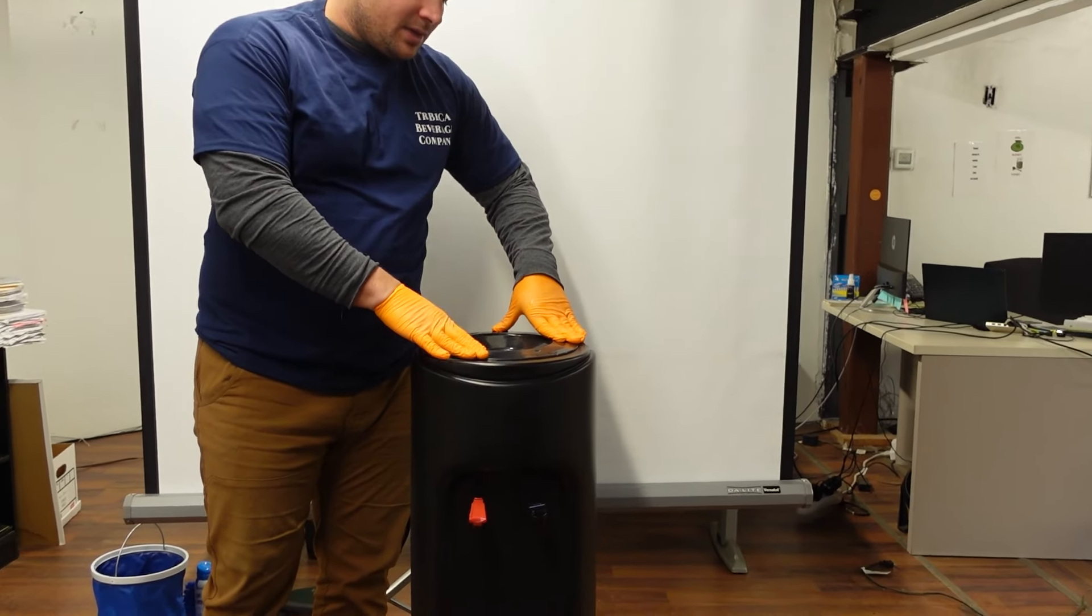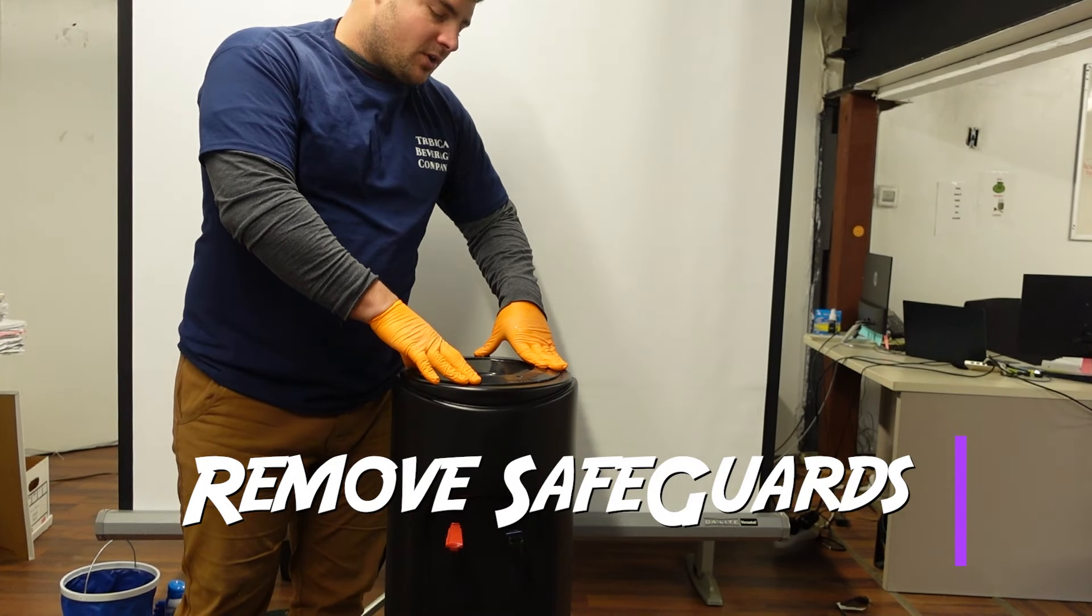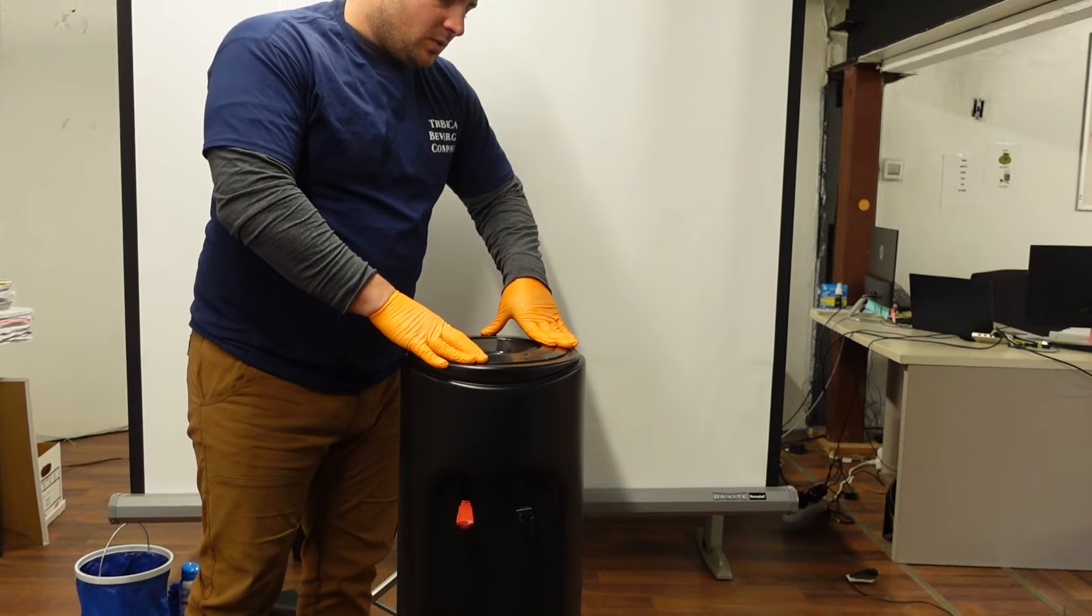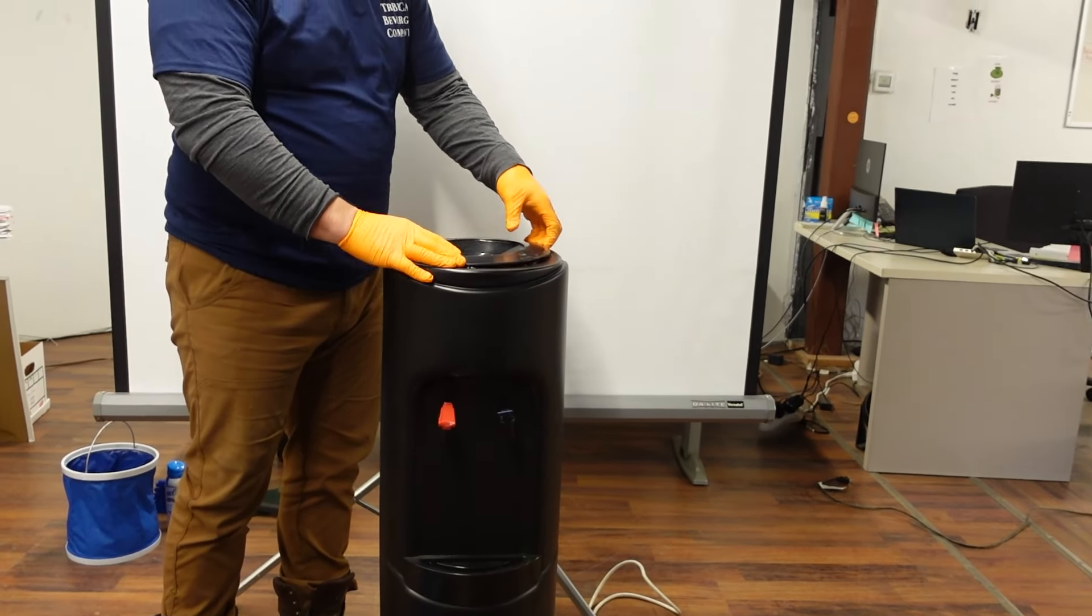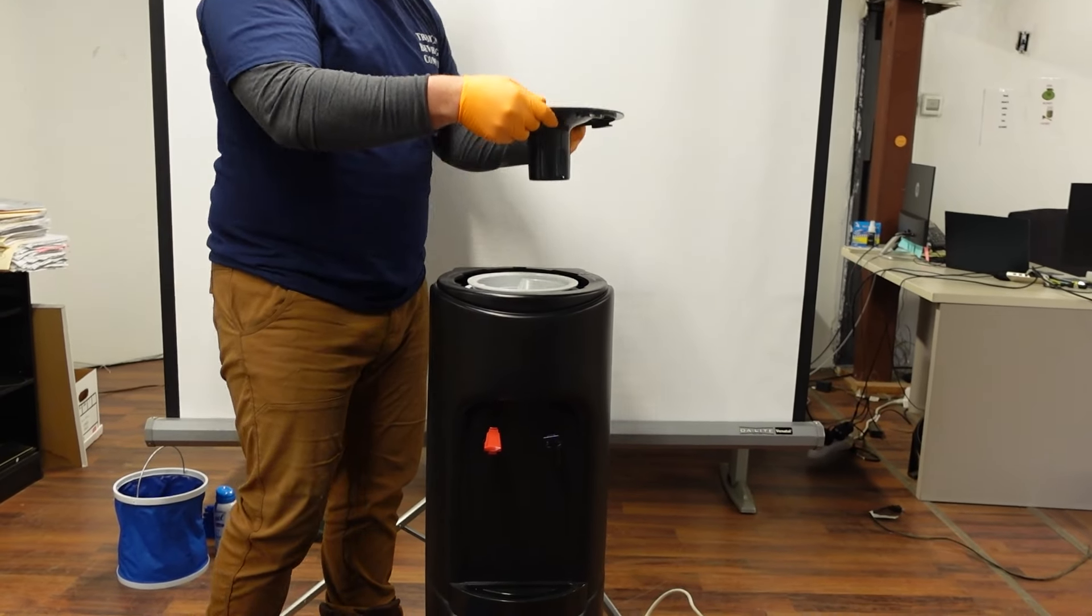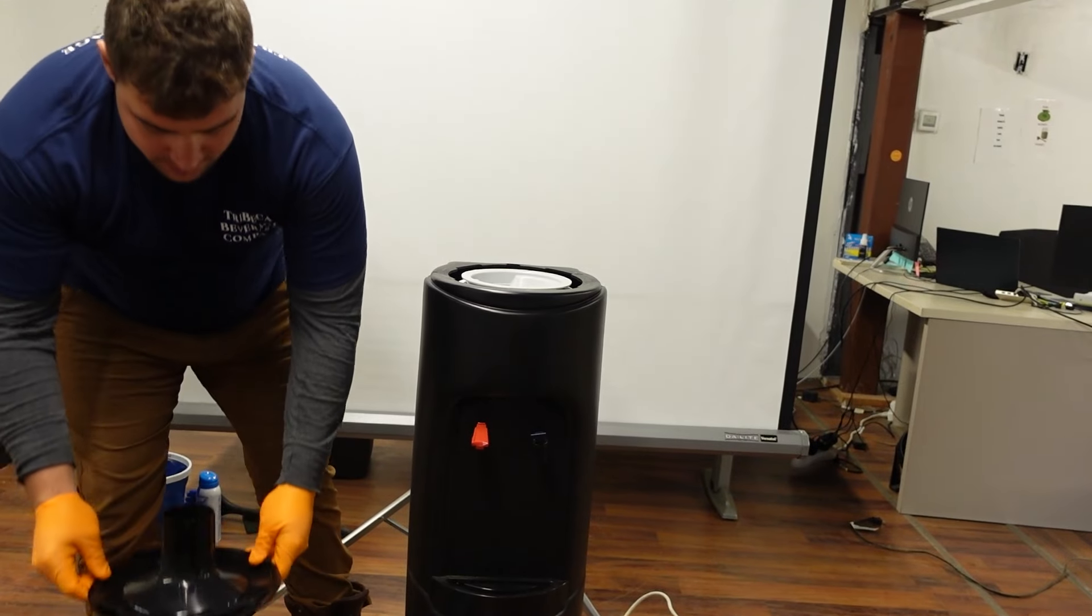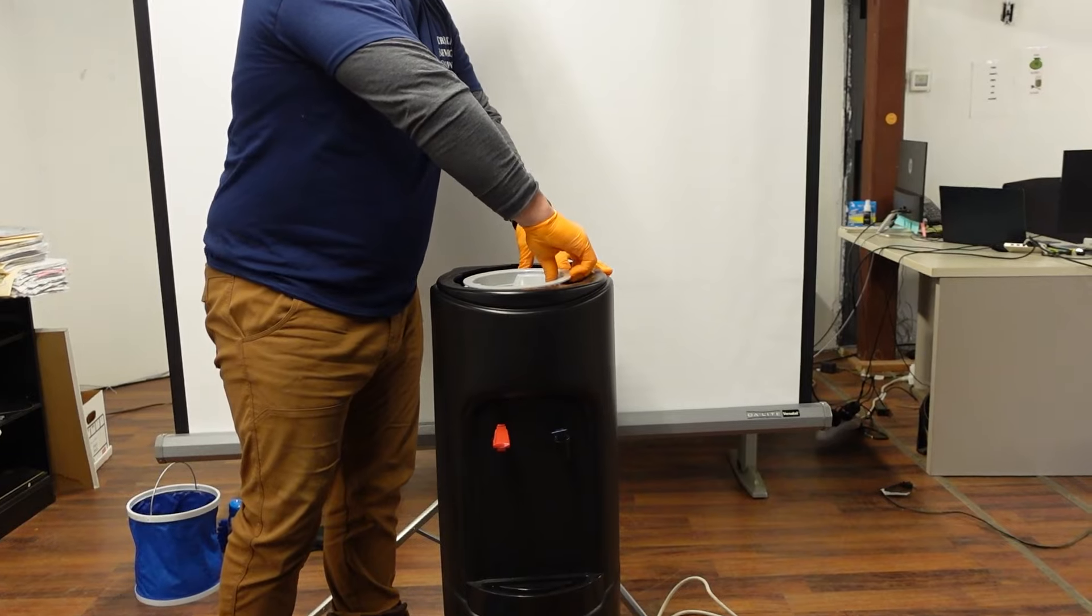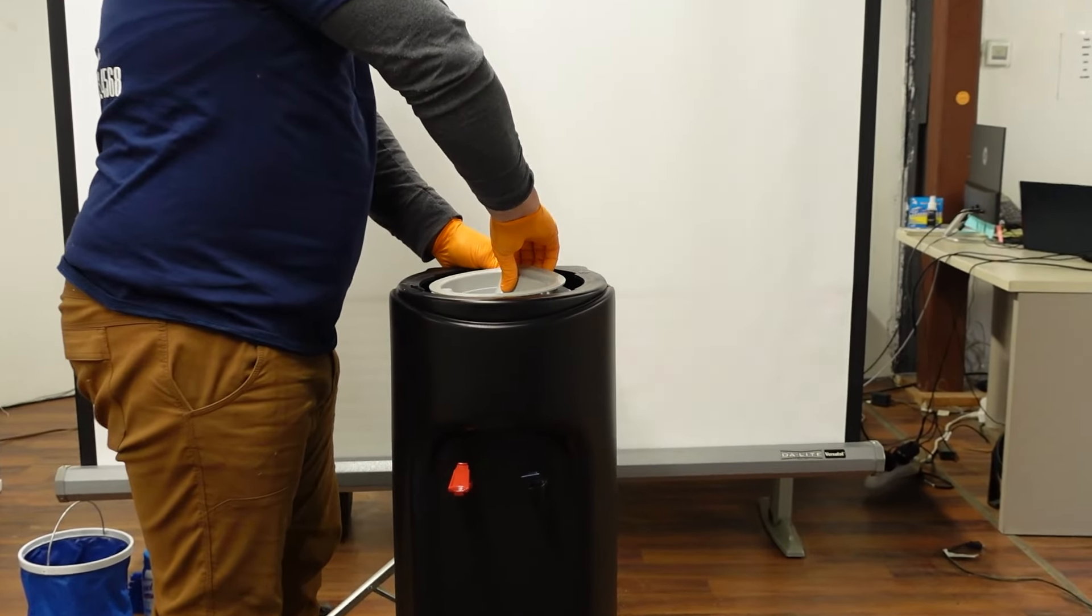The next step is removing the safeguard. There are multiple different types of safeguards. This safeguard you twist counterclockwise and lift up. There's another piece in there, so this is the first piece that comes off, and then there's another piece here which you have to apply a little bit of force to remove.